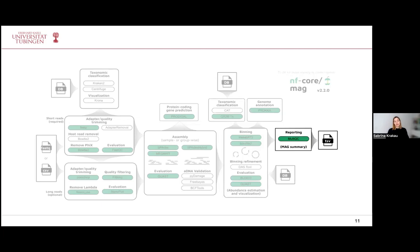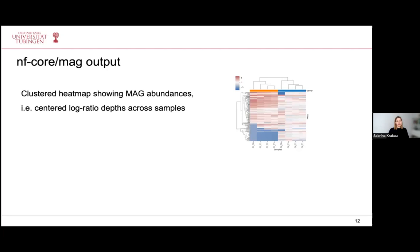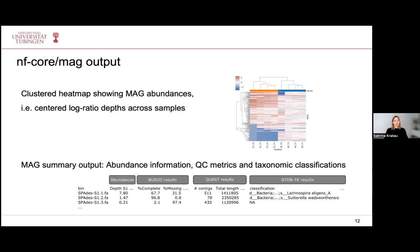Finally, a MultiQC report is generated, along with a relatively comprehensive MAG summary report. The pipeline generates a clustered heatmap showing the bin abundances across different samples. If certain samples cluster together that you know originate from different groups, this might indicate something has gone wrong. The MAG summary contains for each bin the abundance information across different samples, the QC metrics from BUSCO and QUAST results, and also taxonomic classifications from GTDB-Tk.